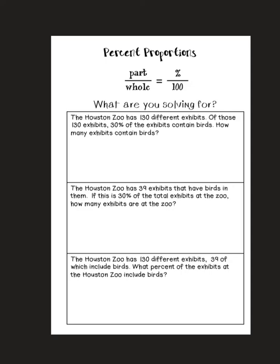We're going to talk about percent proportions in word problems. We're going to start with this problem: The Houston Zoo has 130 different exhibits. Of those 130 exhibits, 30% of the exhibits contain birds. How many exhibits contain birds?